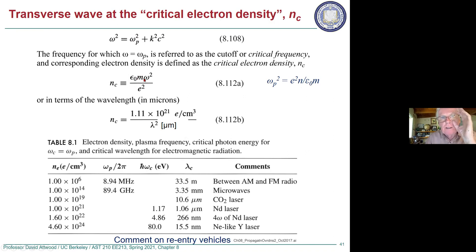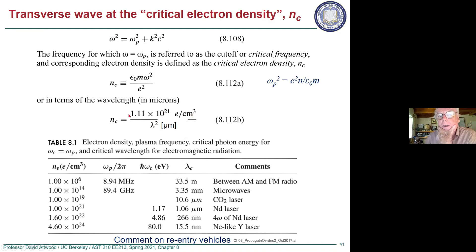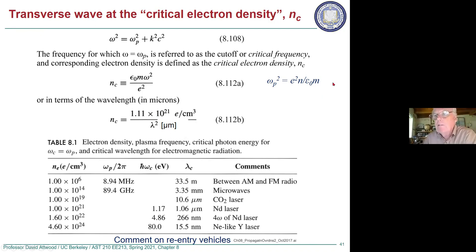For a Ti:sapphire laser at 800 nanometers, lambda is 0.8 microns, so 0.8 squared equals 0.64, giving a critical density of roughly 1.6 × 10^21 electrons per cubic centimeter. If you shine that on a plasma with lower electron density, it'll propagate. But if you shine your laser on a plasma with a density of 10^22 or higher, it's going to reflect off — a bouncing or reflection, perhaps with absorption.